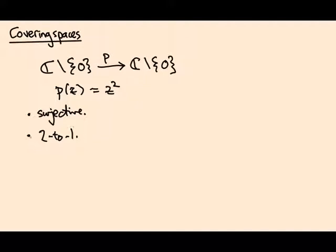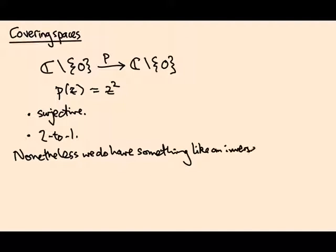Nonetheless, even though it's not injective, we can try and define an inverse. That's why we have a function called the square root. The point is we actually have two square root functions.